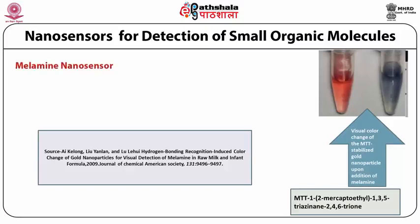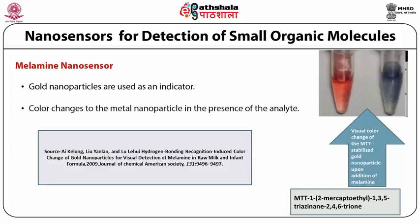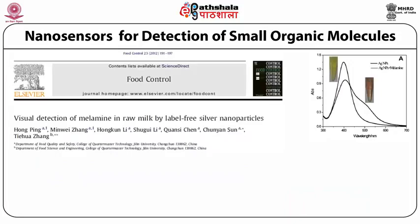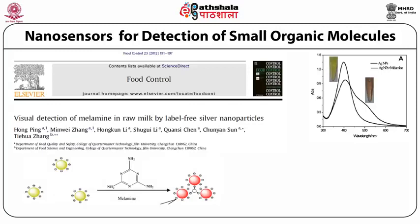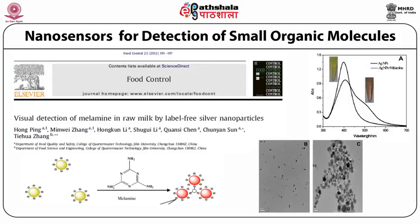This is yet another example of a nanosensor for detection of small organic molecules such as melamine. Melamine is a fraudulent chemical used in milk for enhancing its protein concentration, giving a false concentration of proteins. In this work, scientists used functionalized gold nanoparticles as detectors — when they come in contact with melamine their color changes from red to blue. This is yet another example of visual detection of melamine in raw milk by label-free silver nanoparticles. The yellow colored dots are silver nanoparticles which, when in contact with melamine, agglomerate and change their color to pink, as depicted in TEM images.